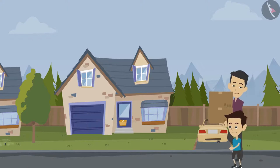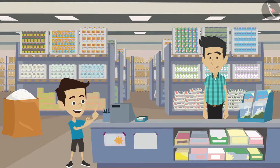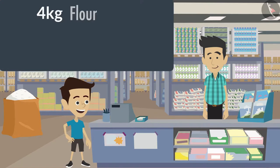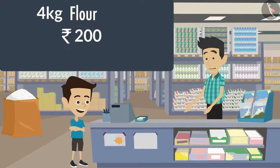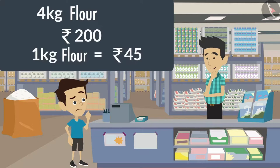Oh wow dad, this is very interesting! Sham stopped at a grocery store while coming back home. His mother had told him to buy four kgs of flour, for which she gave him 200 rupees. The shopkeeper told him that the cost of one kg of flour is 45 rupees. Sham wasn't sure if the money he had would be enough. What is your opinion — will Sham be able to buy the flour with the given money, or will he need more? Think for a while, you can pause the video if you want.